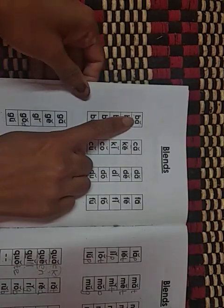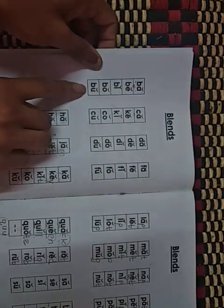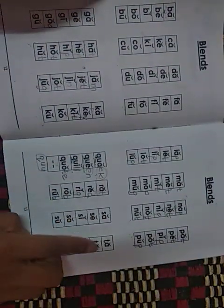In our last video we have seen till R. We have seen from BA. We'll just make revision then we will move for the other two alphabets.